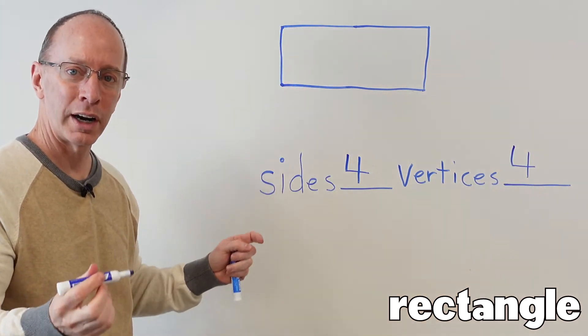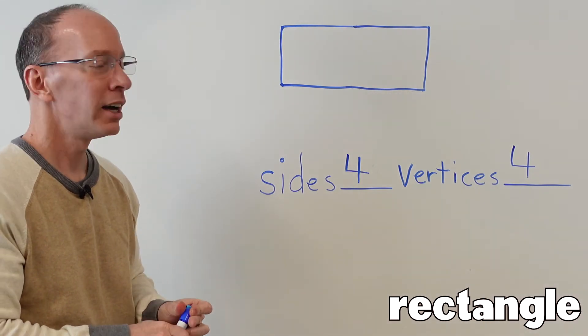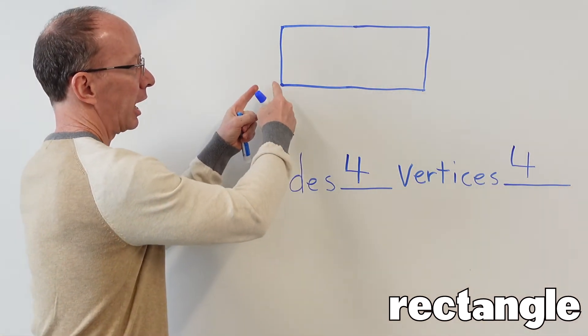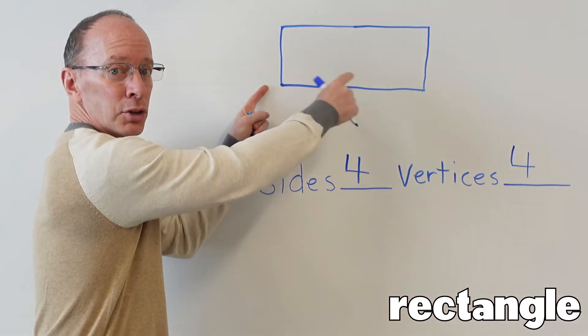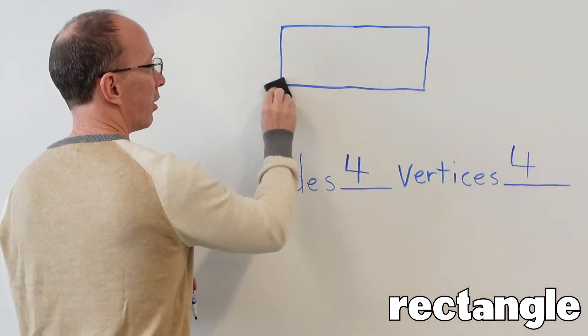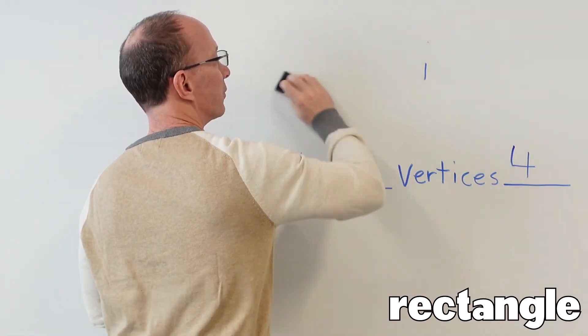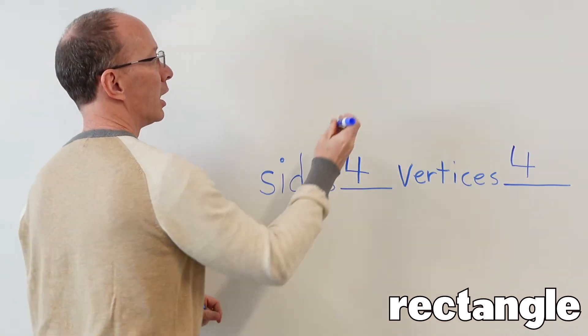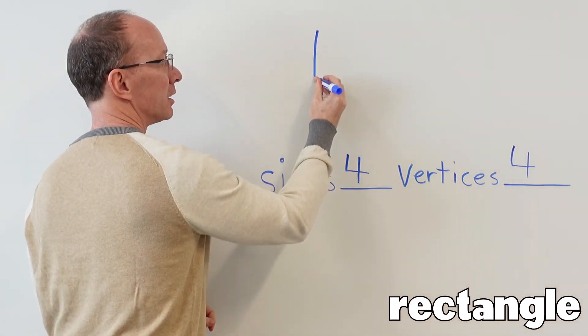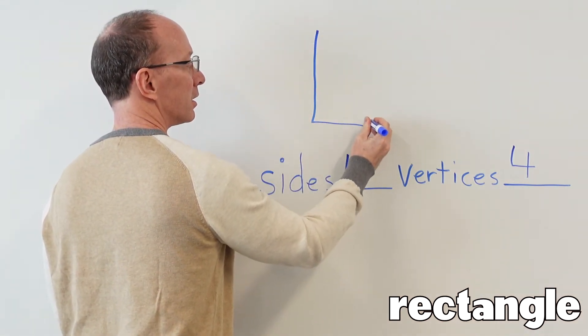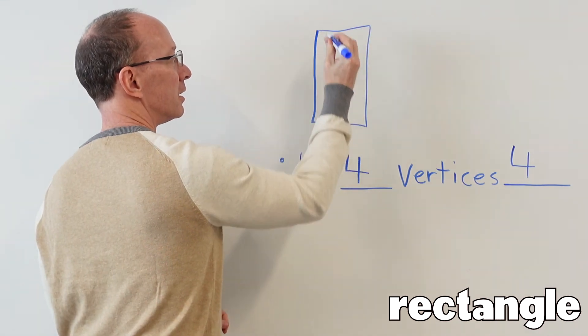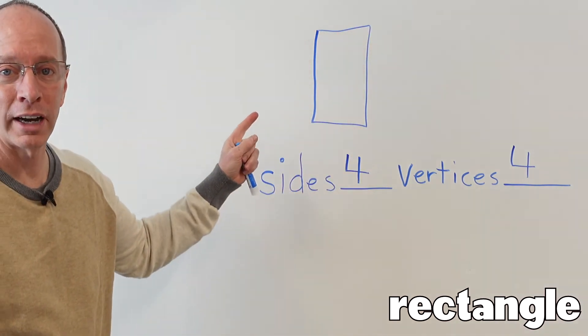Now just like a square, a rectangle you see is, I drew it in this direction right here, but I can also draw a rectangle going up and down just like this. That is also a rectangle.